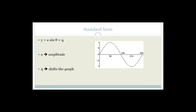Now the standard form: y equals A·sine theta plus Q. The number A in front is the amplitude — it affects the vertical scale, making it taller or shorter. If A is bigger than 1 it makes it taller; if it's a fraction it makes it smaller; if it's negative, it flips the graph. Q shifts the graph vertically — either up or down.